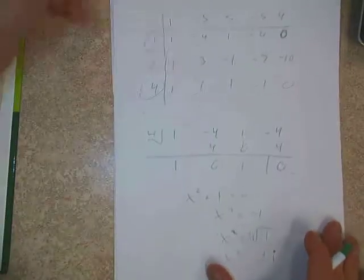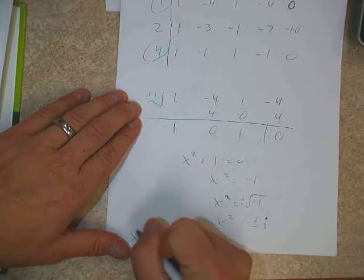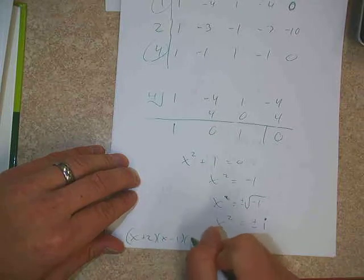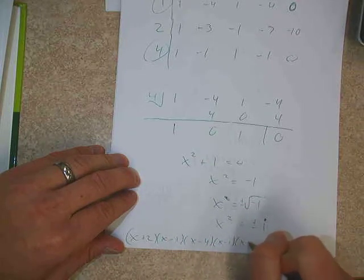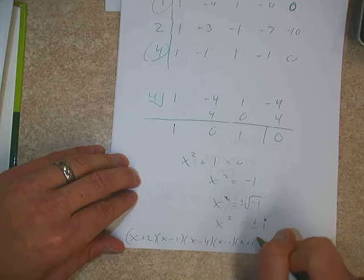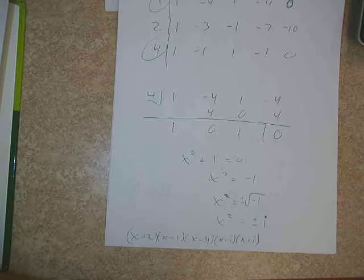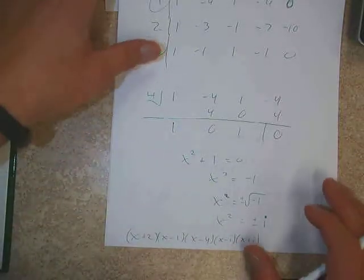With that said, we've now found all five zeros of that quintic equation. And remember, not only do we want to find the zeros, but we also want to write it in factored form. Negative 2 was a factor, so we'd write x plus 2. We'd write x minus 1. We'd write x minus 4. We'd write x minus i. And we'd write x plus i. That would be the factored version of that equation.